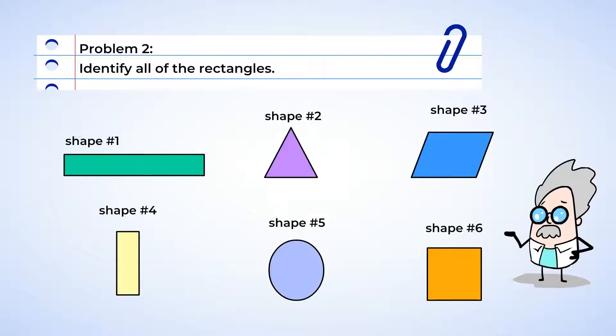Okay, here we need to identify all of the rectangles. What do we know about rectangles? Well, rectangles are quadrilaterals, so they all have four sides. Let's cross off the shapes that do NOT have four sides. Shape 1 has four sides. Shape 2 only has three sides. Cross it off.